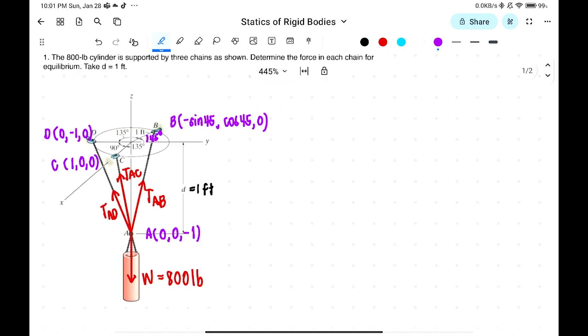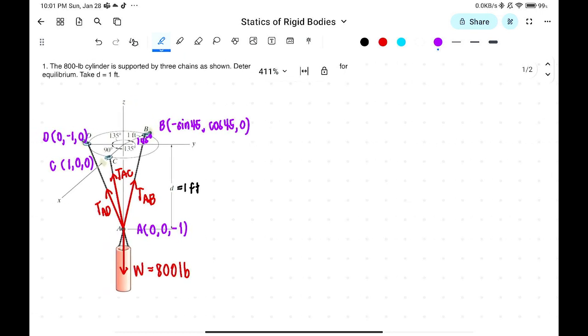Let's tabulate this. For the tensions, we have tension AB, tension AC, tension AD. Then we write x, y, and z. We'll get the x component using head minus tail.